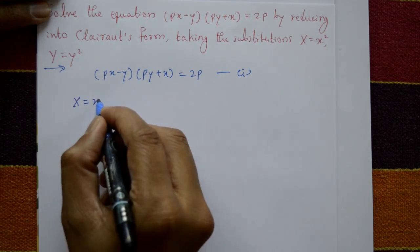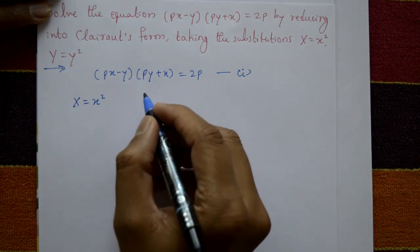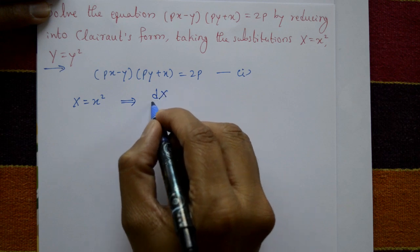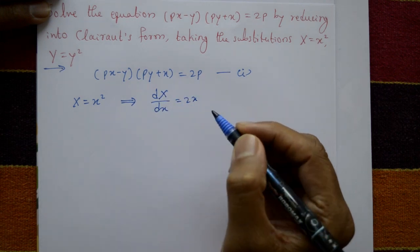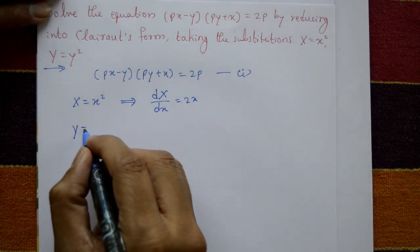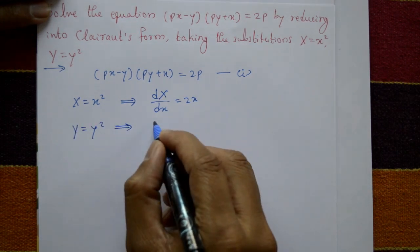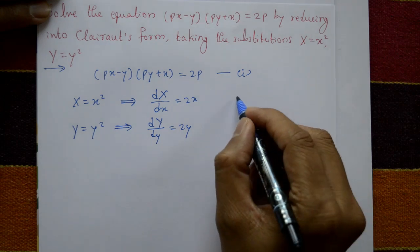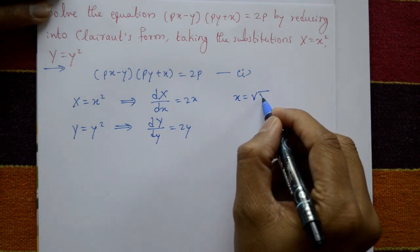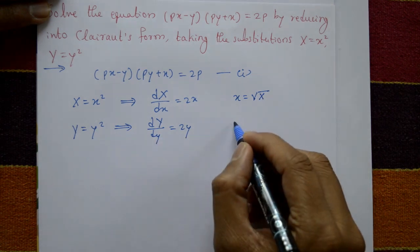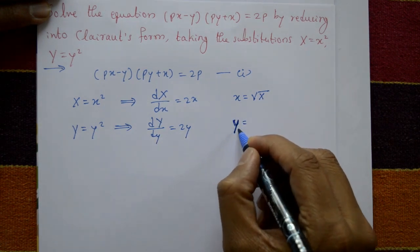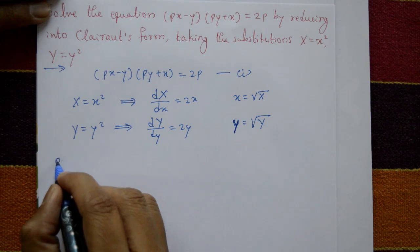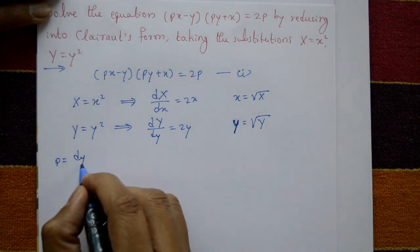Since capital X = x², differentiating gives dX/dx = 2x. And capital Y = y², differentiating gives dY/dy = 2y. So small x = √X and small y = √Y. Small p is defined as dy/dx.